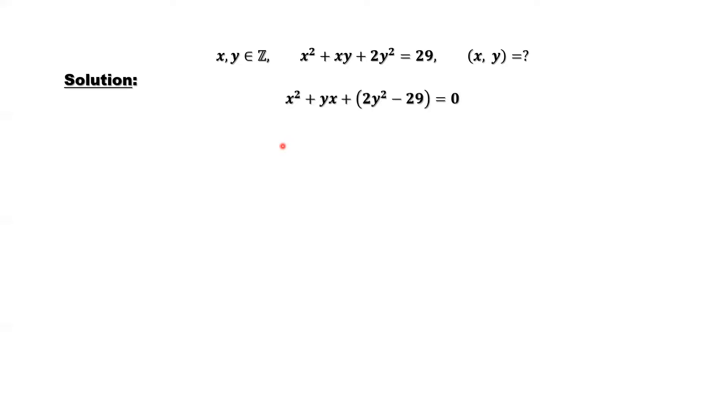We rewrite the given condition as x² + yx + 2y² - 29 = 0. We can see that this is a quadratic equation about x, where a is 1, b is y, and c equals 2y² - 29.